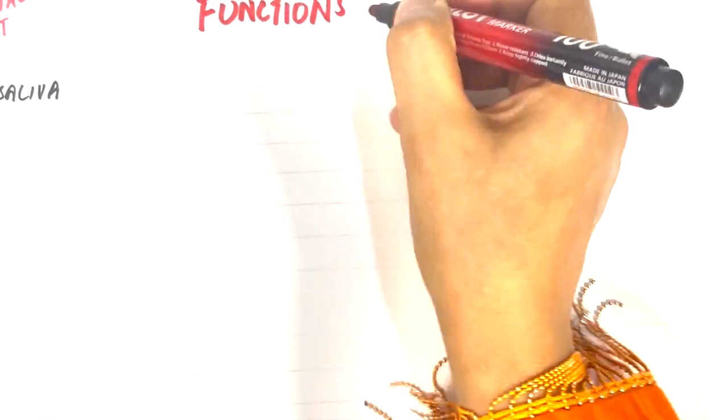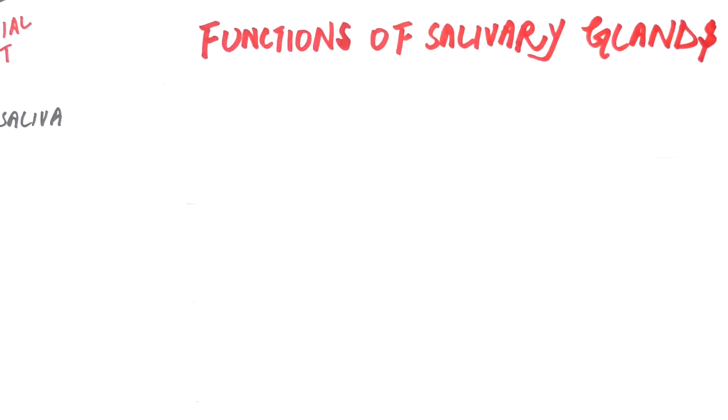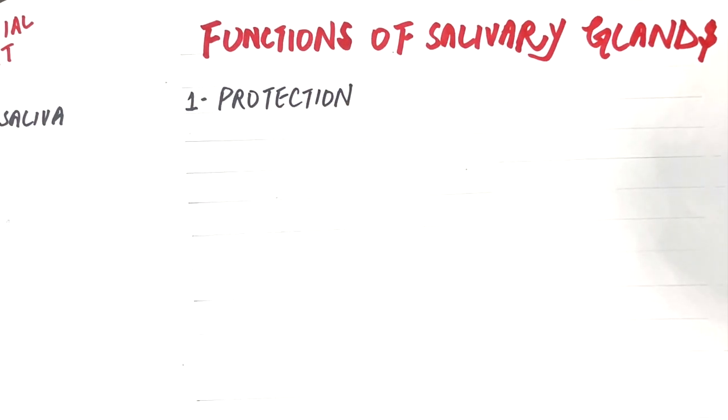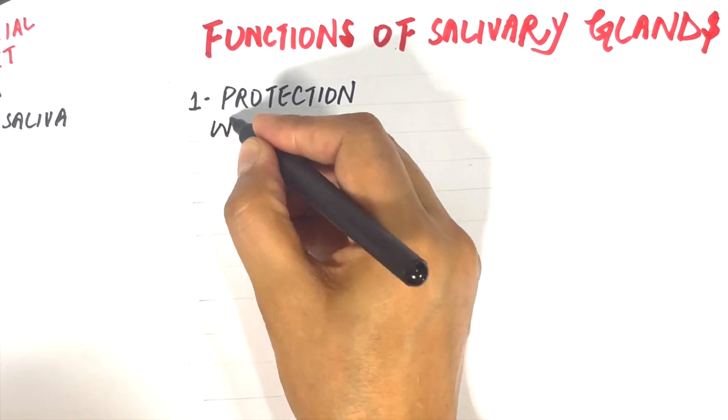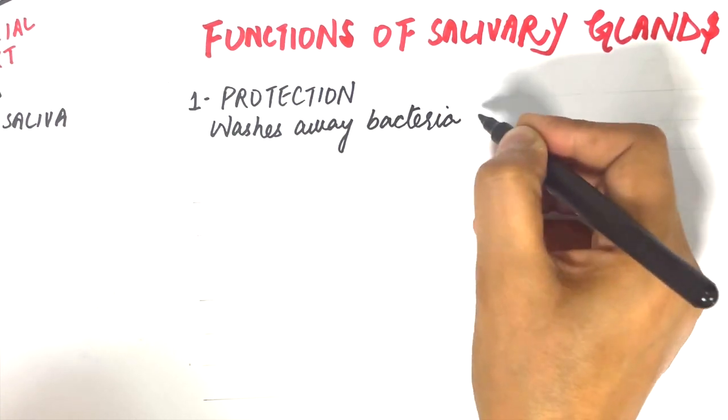Let's now end this video with the functions of salivary glands. Salivary glands produce saliva, and saliva has got so many functions in the oral cavity, the most important of which is the protection of the oral cavity. Its fluid nature clears the oral cavity by washing away non-adherent bacteria and other debris from the oral tissues.